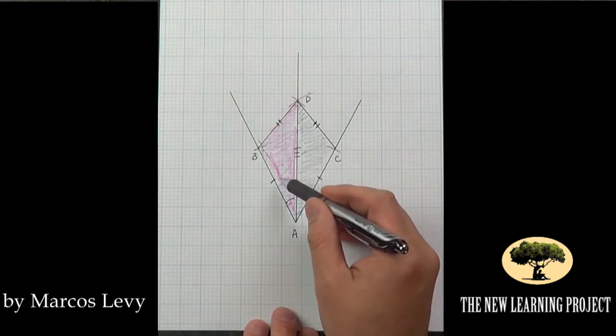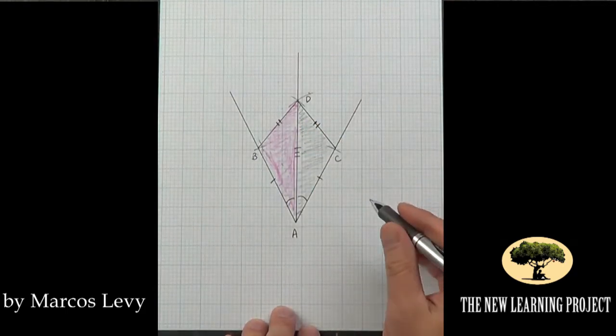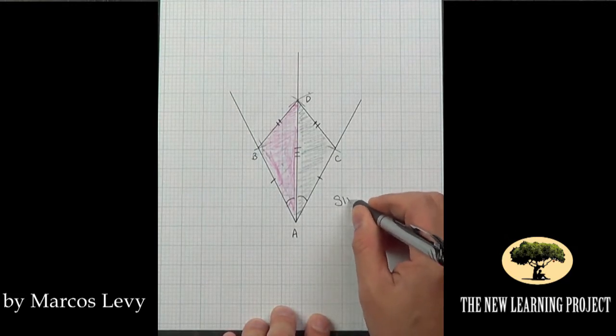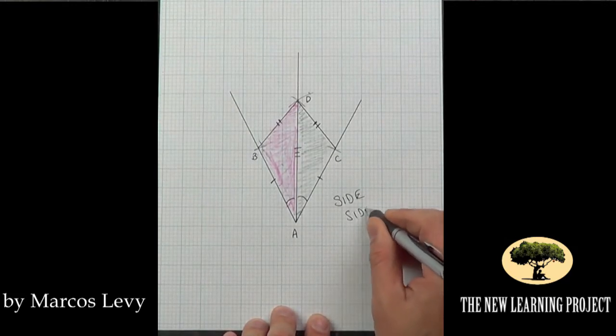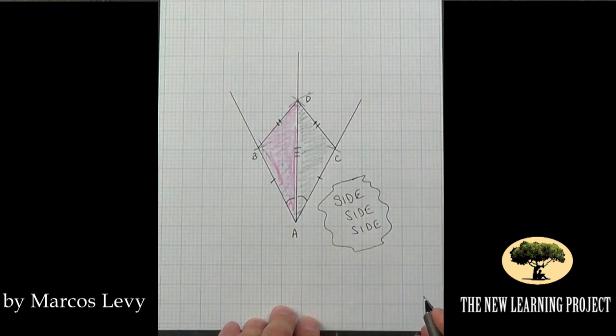And so we have two triangles where each of their sides, one, two, and three, are equal to each other. And when two triangles have equal sides, they are equal by the side-side-side theorem.